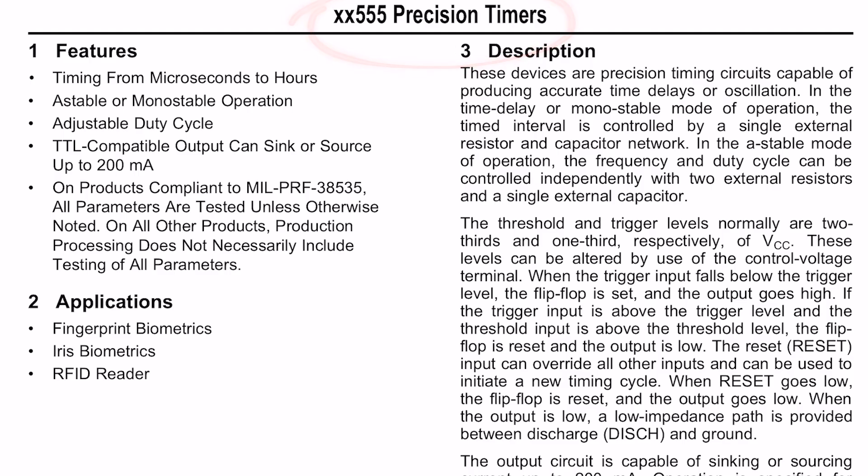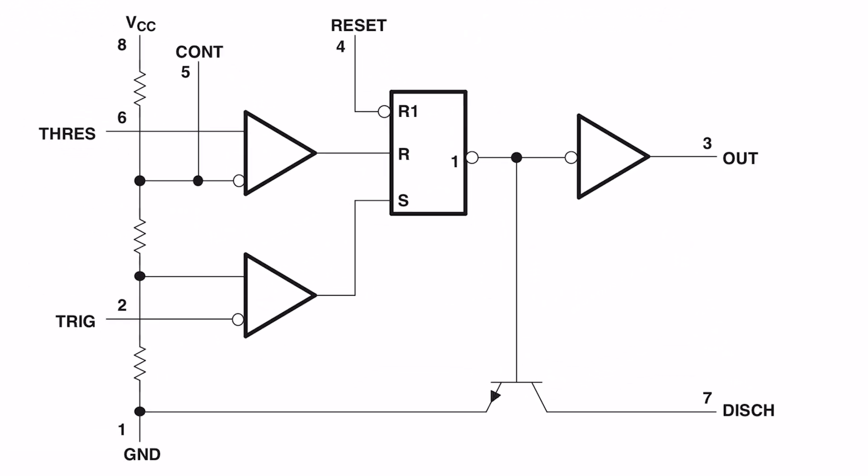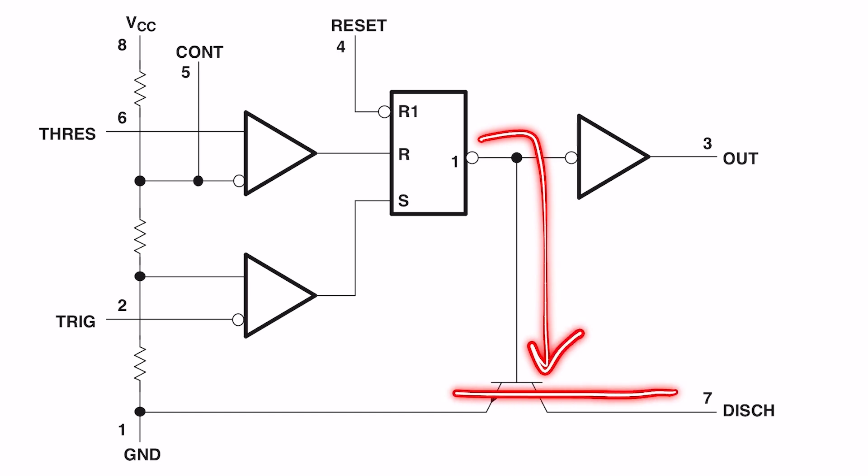This is the data sheet of 555 timer IC and here we can see the functional diagram of its internal operation. The three resistors from VCC to ground form a voltage divider. These two are comparator circuits. So if a signal is more at its non-inverting terminal compared to the inverting terminal the output is logic high otherwise logic low is produced at the output. These comparator circuits control the operation of the SR flip-flop. Also the transistor can discharge the load connected at pin 7 if the flip-flop output is high or when an external active low reset signal is given to the IC.